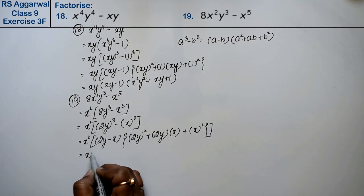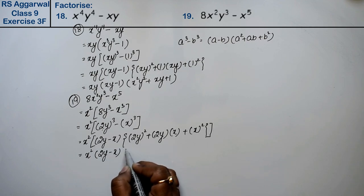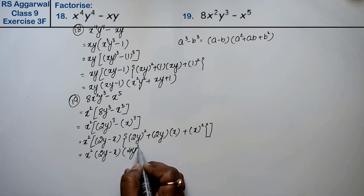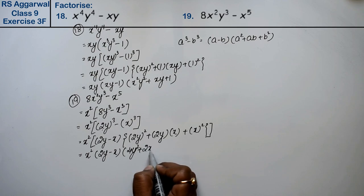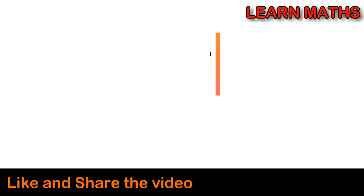So what did we get? x square, 2y minus x, and 4y square plus 2xy plus x square is the answer. Thank you.